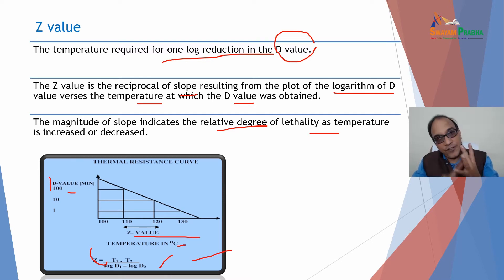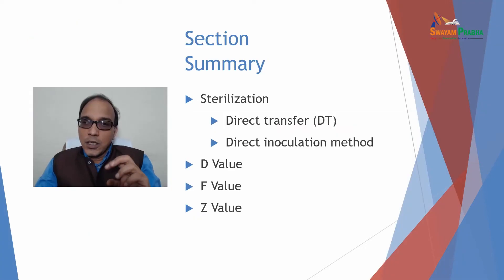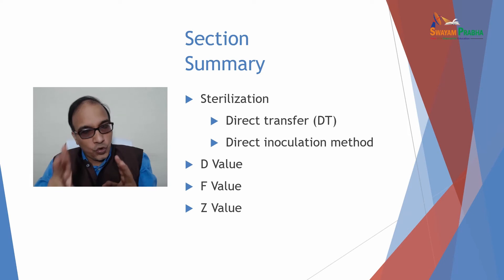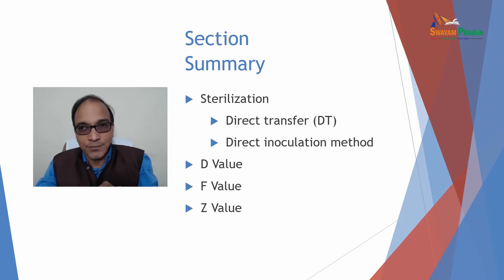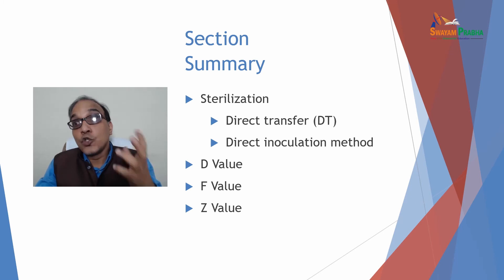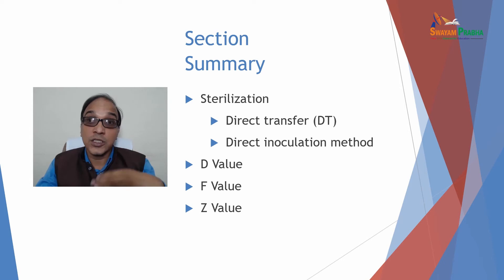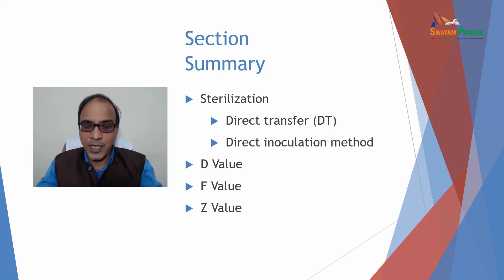Please remember the definitions of D-value, F-value, and Z-value — they are the determinants of efficiency of sterilization, and are frequently asked in examinations. Regarding biological indicators: these are microbes which change their color or properties with the change in degree of sterilization. For different kinds of microbes there are specific biological indicators. You must go through the pharmacopeia — Indian Pharmacopoeia and United States Pharmacopoeia — to know the specific biological indicators for specific sterilization methods. Remember the names of these biological indicators as they are important in competitive pharmacy exams.